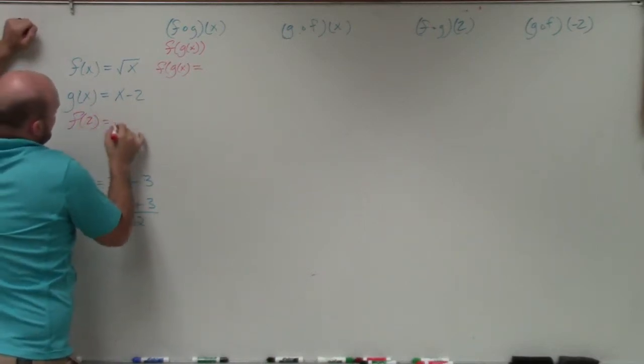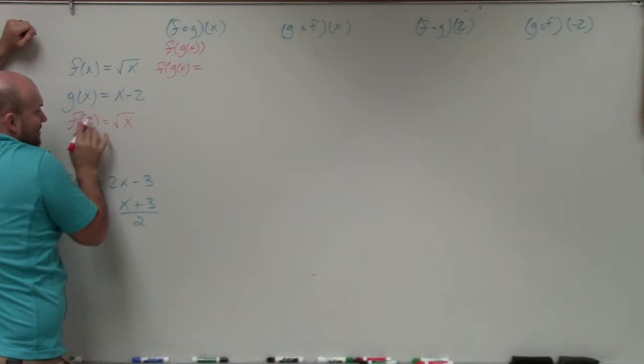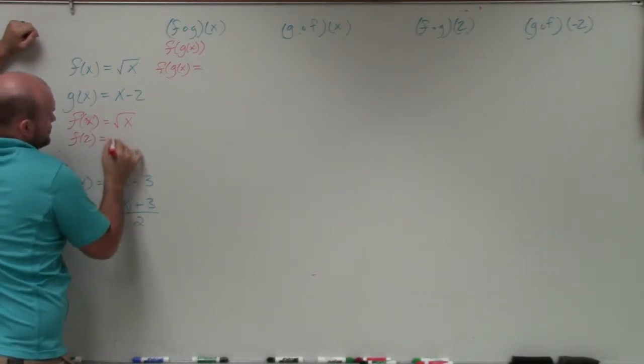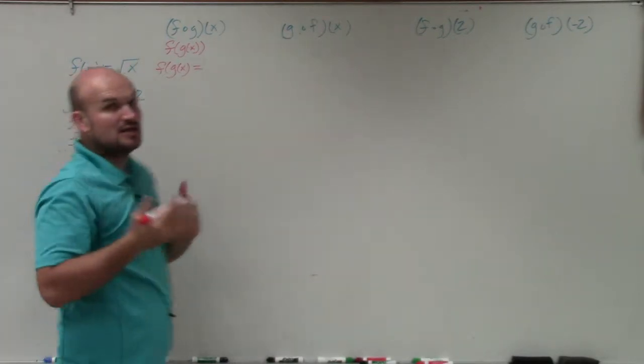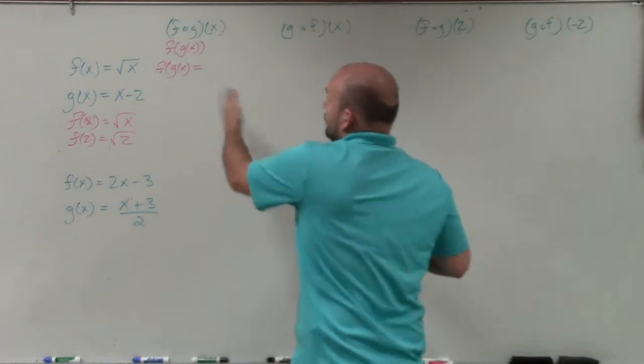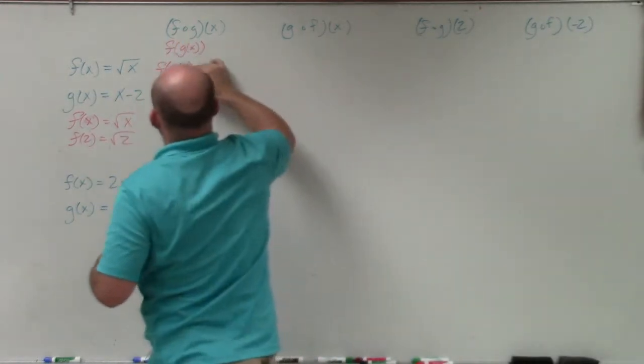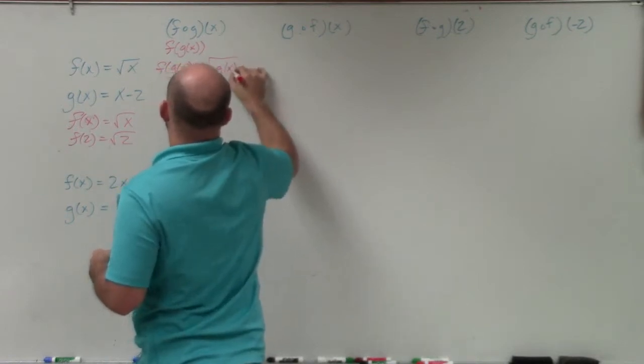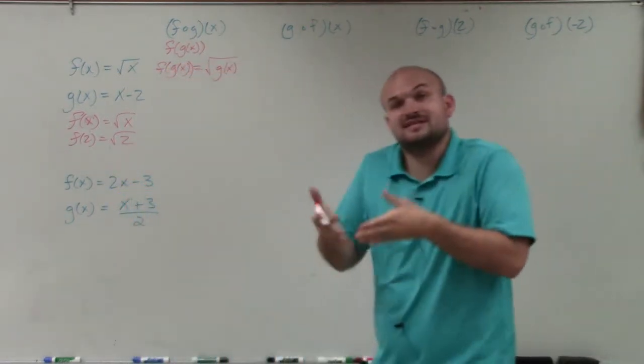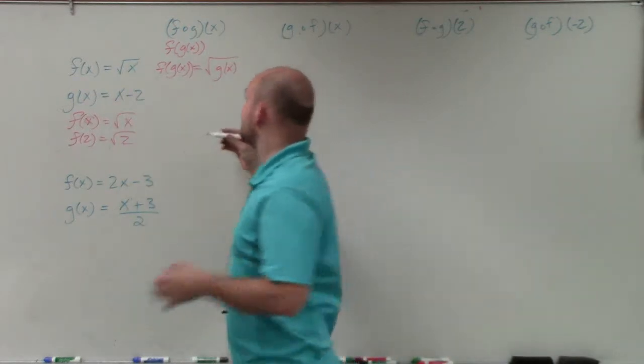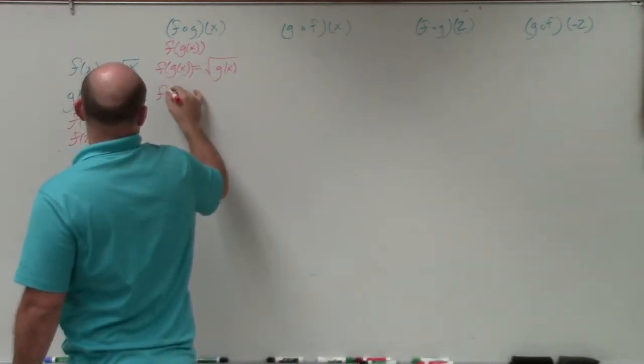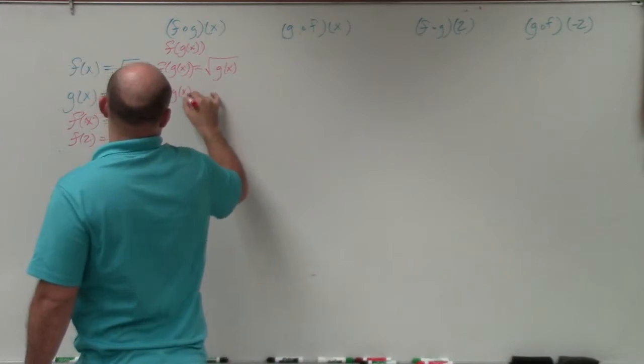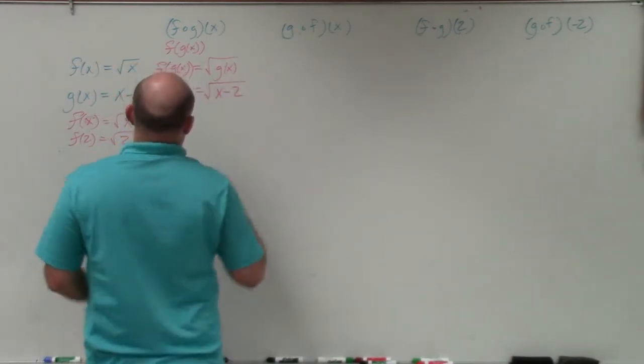So f of x equals that. So then f of 2 equals the square root of 2, and you're done. So now if I'm doing f of g of x, wherever I see an x, I'm going to now plug in a g of x. So therefore, that's the square root of g of x. Well, the purpose again in this one is we know what g of x is. g of x is x minus 2. So then f of g of x is equal to the square root of x minus 2.